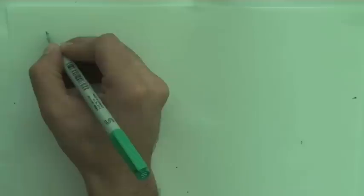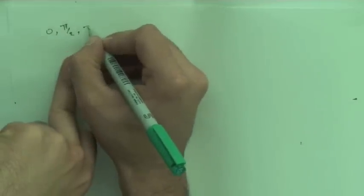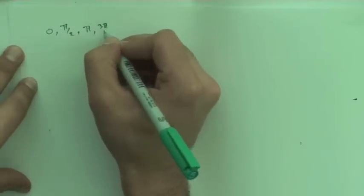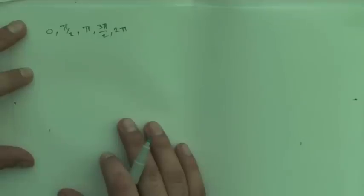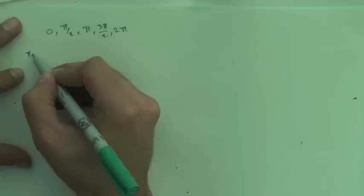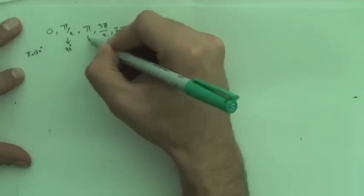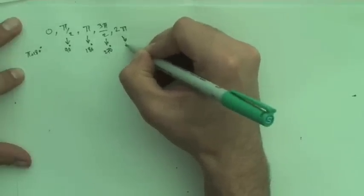The angles are 0, π/2, π, 3π/2, and 2π — these are the main angles I'm going to show you how to calculate. The first thing you need to know is that π is equal to 180 degrees, so these become 90, 180, 270, and 360 degrees. Let me draw the table here.